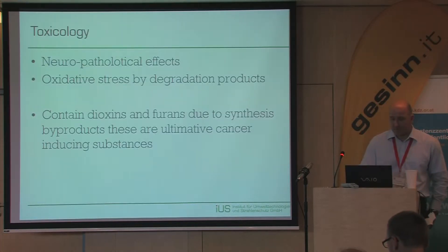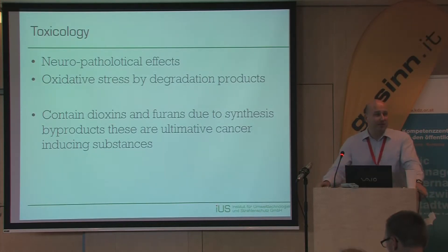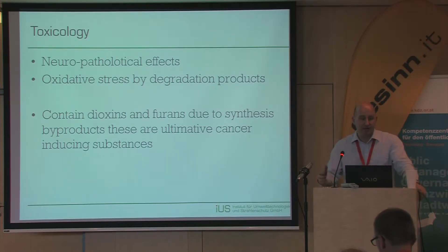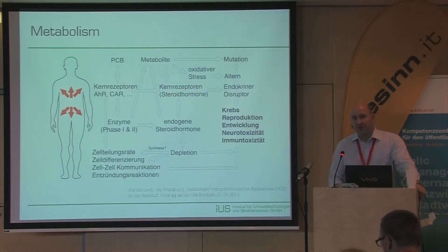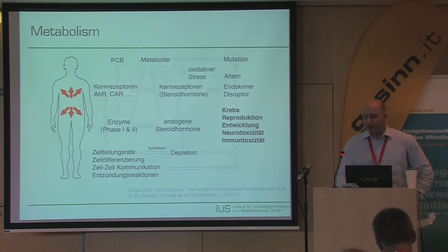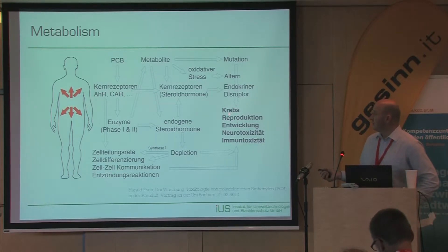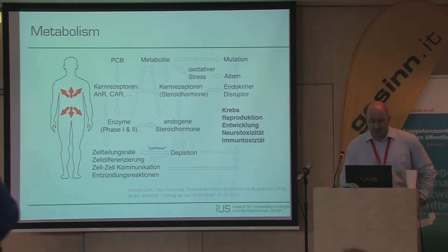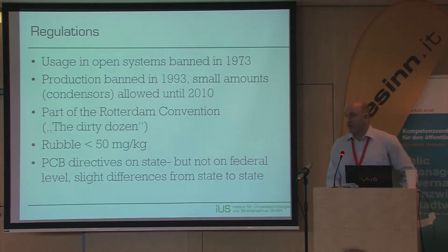Why are we so keen to remove PCB? Because it is neuropathological and causes oxidative stress. Due to the synthesis of the different compounds, it may also contain dioxins and furans, which are quite well known to be carcinogenic. The metabolism can be quite complex, and in the end, the neurotoxicity and the immunotoxicity are the most prominent health effects. Regulators saw quite early that these chemicals are problematic.